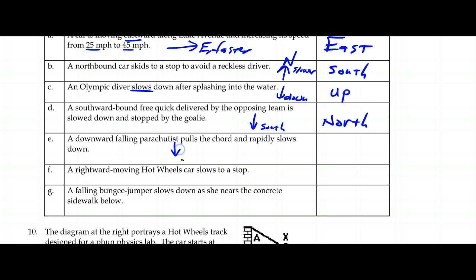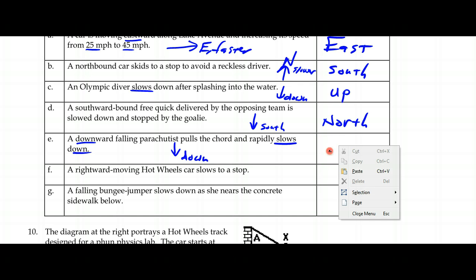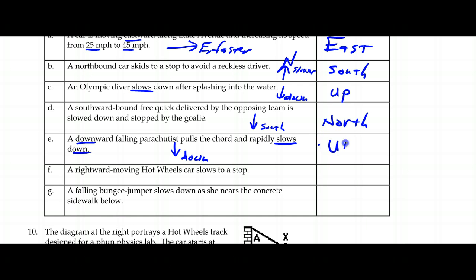A downward-falling parachutist pulls the cord and rapidly slows down. Note that 'slows down' here means their magnitude is getting smaller and smaller — they're getting closer to some set value. The motion is down and they're getting slower, so the acceleration must be opposite, which means it must be up.